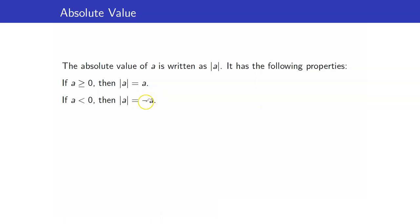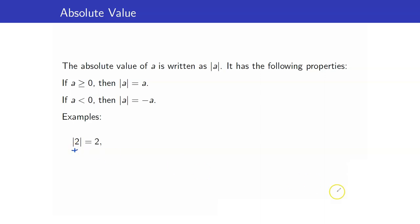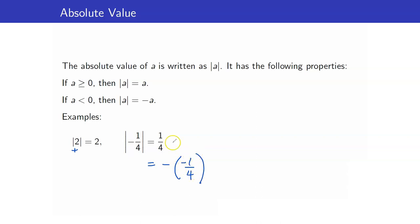Why is it equal to negative A? Remember that the absolute value of a number is always positive. And if A is negative, then negative A is positive. For example, the absolute value of 2 is just itself because 2 is positive. The absolute value of negative 1/4, using the definition, is equal to negative of negative 1/4, because negative 1/4 is negative. So that gives us 1/4.